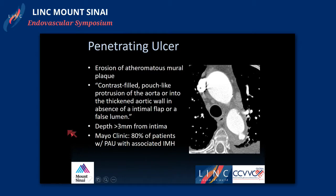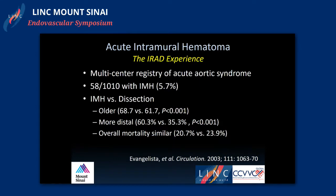Radiologists use the definition of three millimeters from the intimal surface as an ulcerated plaque. The Mayo Clinic study found that eighty percent of patients with PAUs had associated intramural hematomas, which makes sense pathophysiologically.